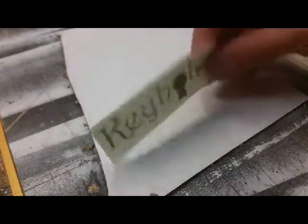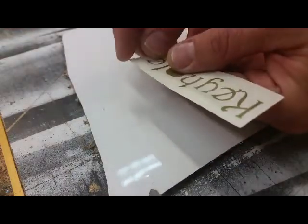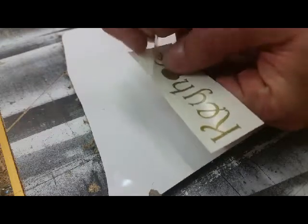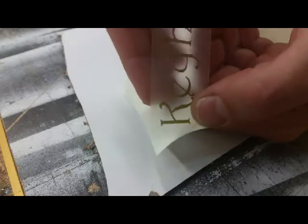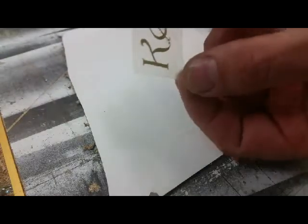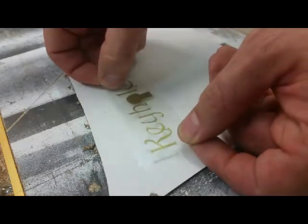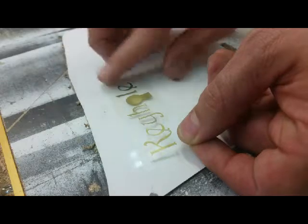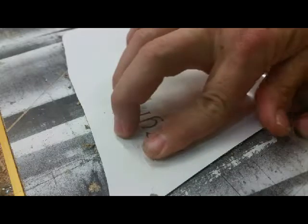So when you get these, it's simply a sticker. You'll want to peel the decal off of the backing, and the decal will remain on the front bit of applicator. Then line it up the best you can and simply press it down on the laminate as such.